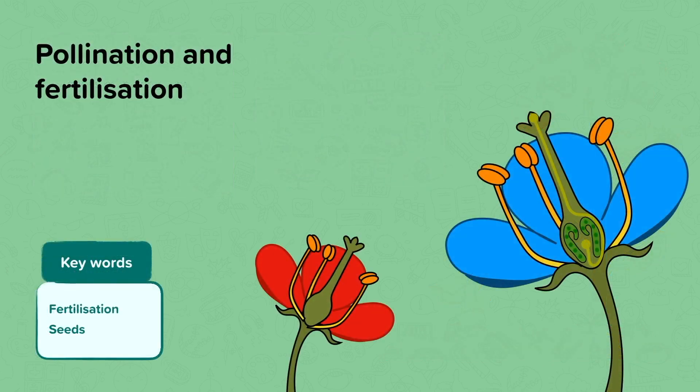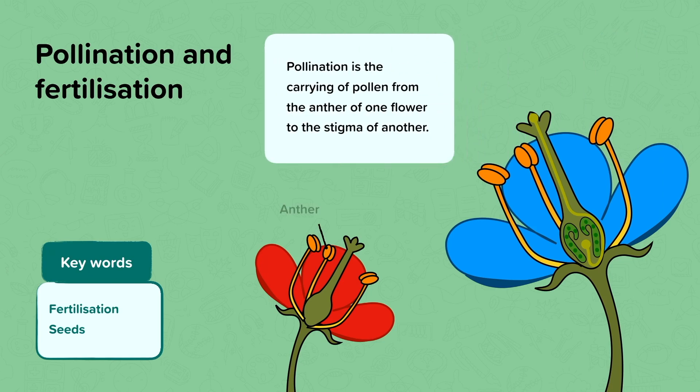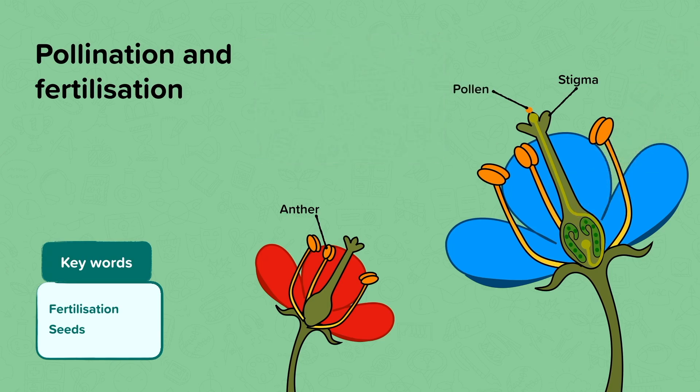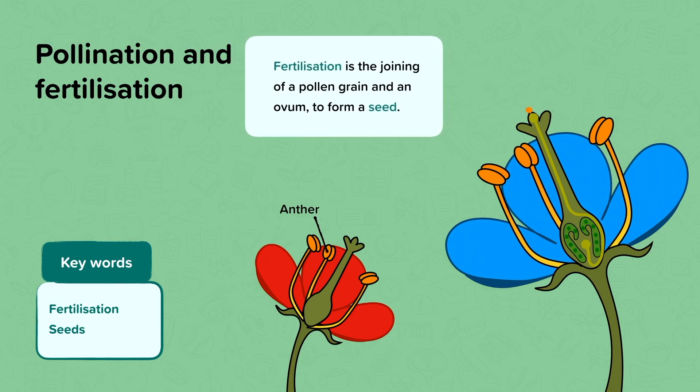During pollination, pollen is carried from an anther of one flower to the stigma of another. It can be done by insects or the wind. After this, fertilisation is the joining of the pollen grain and an ovum. The pollen travels into the centre of the flower and joins with an ovum.